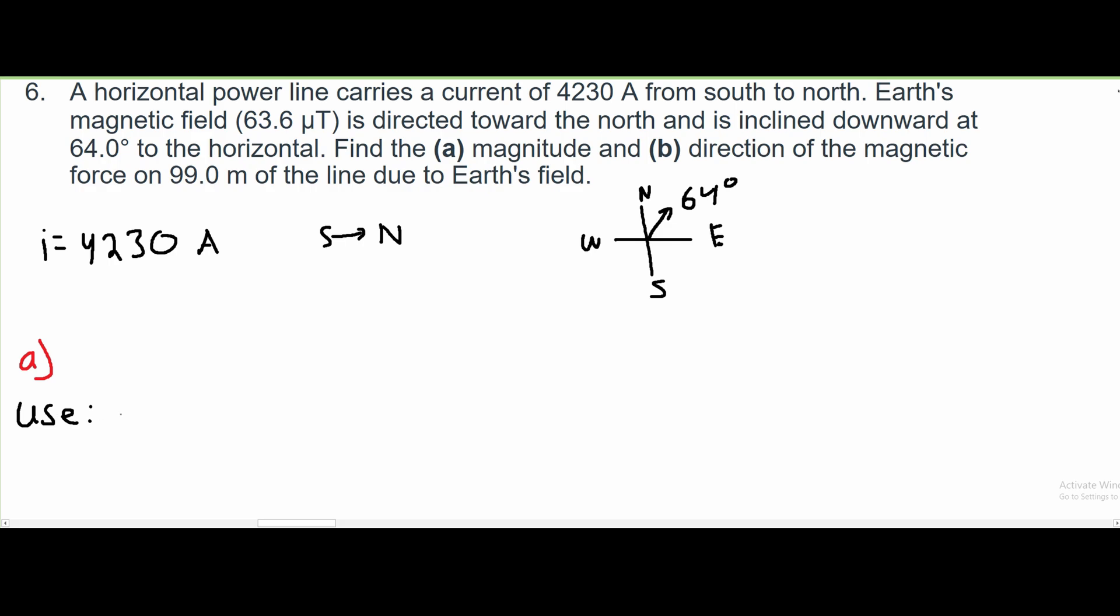To find the magnitude, we need to find the force. So we're going to have to use the formula for force. And it is the current times L times B times the sine of our angle. For example, we can plug in our values. We have our current that's 4,230 amps.